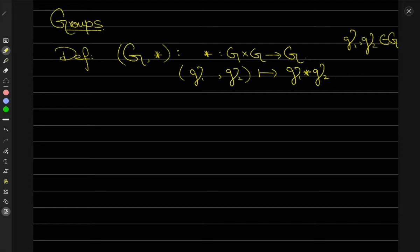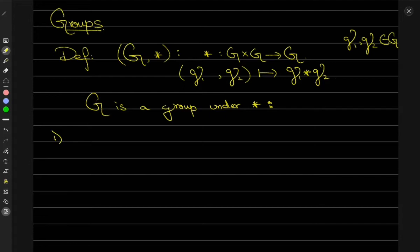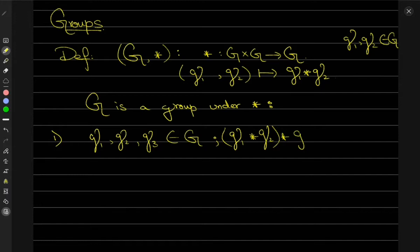Then I can say that G is a group under this binary operation star if some properties are satisfied. The first property is: suppose you have elements G1, G2, and G3 all belonging to group G. Then composing G1 with G2 first and then with G3 must be exactly the same as composing G2 with G3 first and then with G1. This is known as associativity, and this property must be satisfied if G is a group.